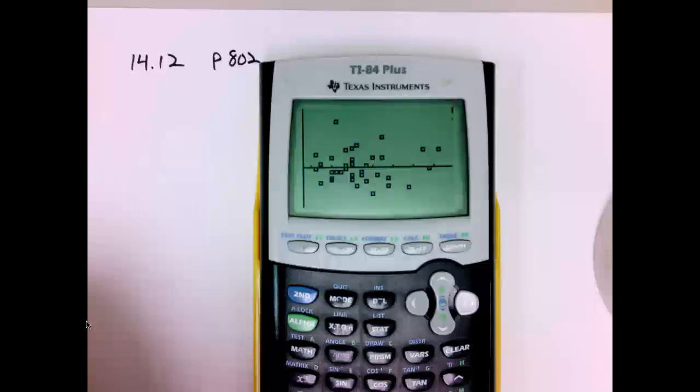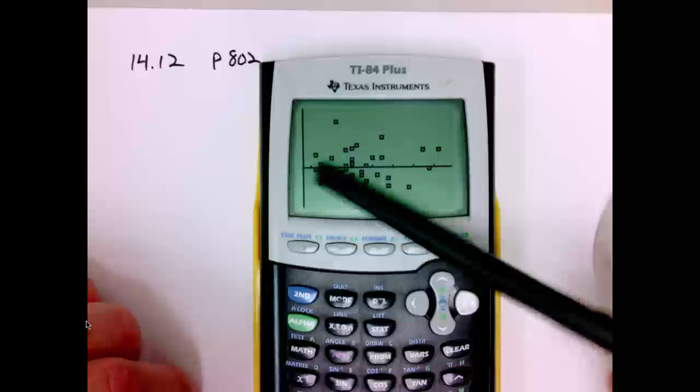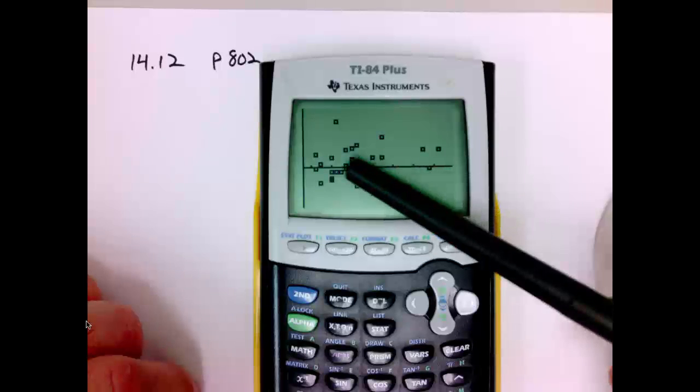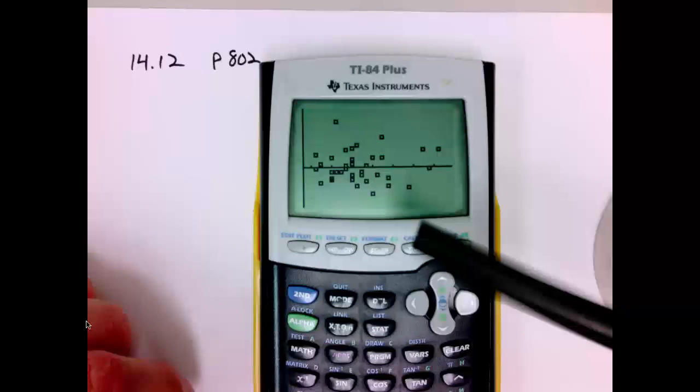And there's our residual plot. And you can see it's pretty decent random scatter about this line, the zero line here. There appears to be an equal amount above and below.